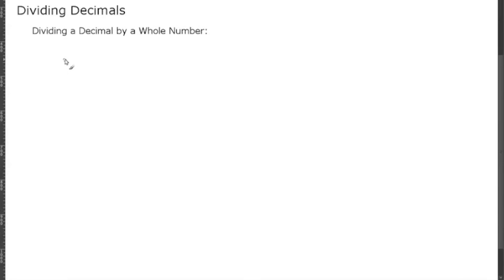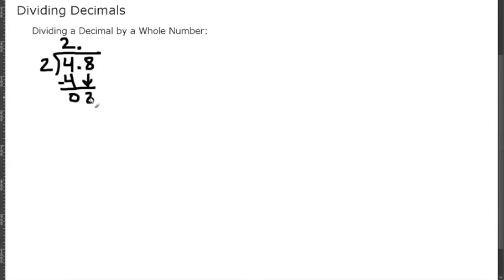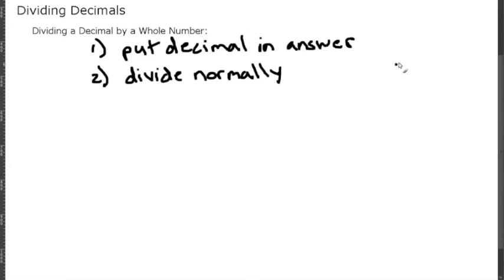Let's divide 4.8 by 2. The decimal place is already taken care of when we bring it straight up. Two goes into 4 two times; 2 times 2 is 4, subtracting gives 0. Bring down the 8 — 2 goes into 8 four times; 8 minus 8 is 0. So 2.4 is our answer. Just remember to bring the decimal up directly from where it is.